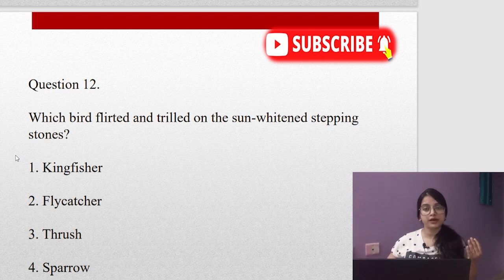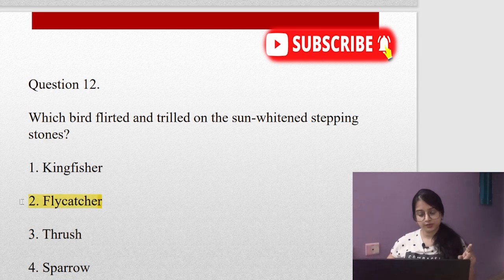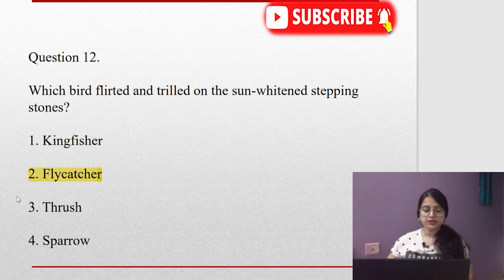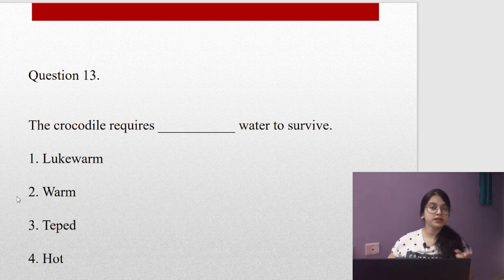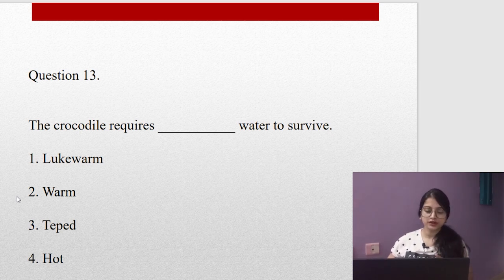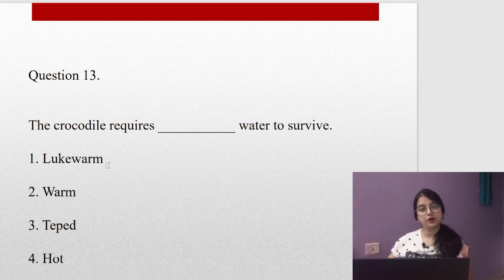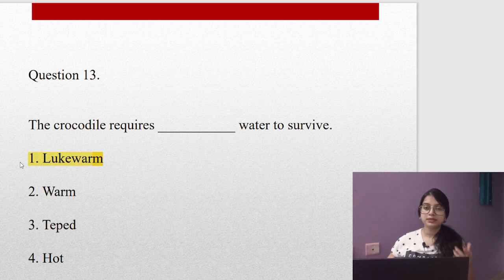Question number twelve: Which bird flirted and drilled on the sun-whitened stepping stones? Is it the kingfisher, the flycatcher, the thrush, or the sparrow? You may make a mistake between kingfisher and flycatcher, but yes it is the flycatcher, option number two. Question thirteen: The crocodile requires what kind of water to survive? Lukewarm, warm, tepid, or hot? Option three is tepid but the spelling is wrong. When lukewarm is an option, lukewarm would be the correct option, because tepid also means lukewarm.